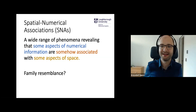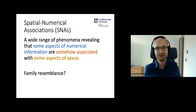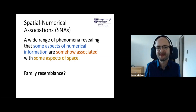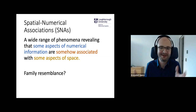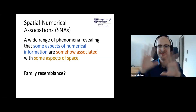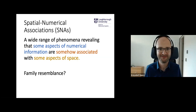Spatial numerical associations. At some point we tried to build a definition of this, and this is the most specific form we could come up with. It's a wide range of phenomena which reveals that some aspects of numbers are somehow associated with some aspects of space, which is probably not super satisfying. Maybe we should think of Wittgenstein's family resemblance to make some sense out of this — we have family members that are similar to one another, but there is no defining feature to all of them.